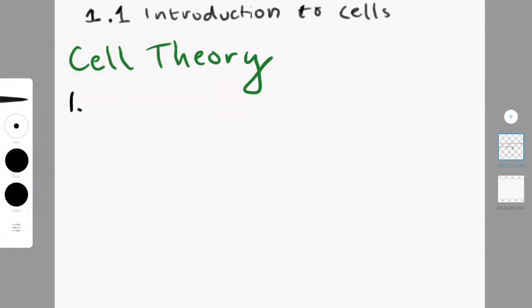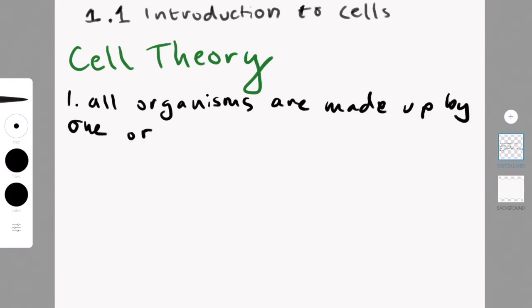The first thing you have to know about cells is cell theory. In cell theory, there are three main assumptions. All organisms are made up of one or more cells. The evidence for this mostly just comes with light microscopes and what we were able to see when those came to be.